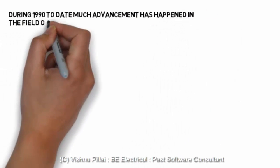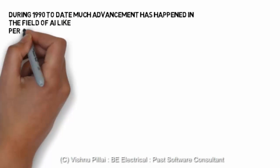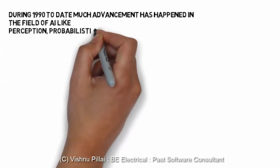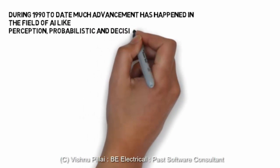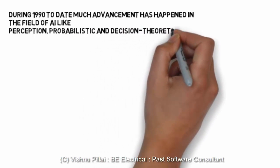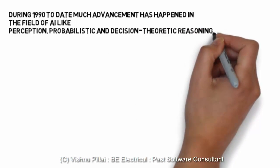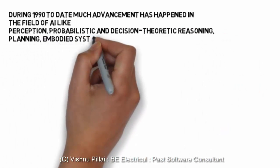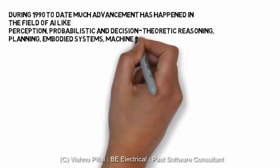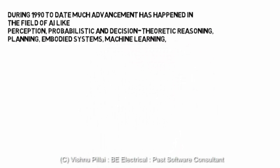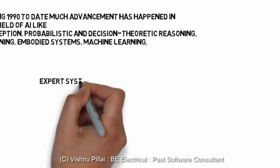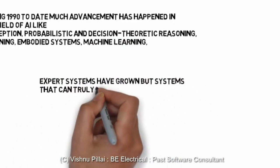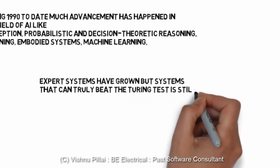During the 1990s, much advancement happened in the field of Artificial Intelligence in areas like perception, probability, and decision making. Theoretical reasoning and logical reasoning are areas where much research has happened. Also in planning, embedded systems, and machine learning, much work happened during this period, and expert systems also grew significantly.